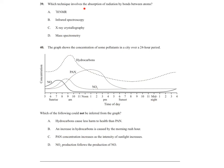Question 39 is a recall question: which technique involves the absorption of radiation by bonds between atoms? Infrared spectroscopy shines infrared radiation at a sample and measures how much is absorbed by the bonds. HNMR involves magnetic properties and spin of nuclei. X-ray crystallography uses diffraction of X-rays to study molecular structures — not absorption by bonds. Mass spectrometry propels charged particles and measures their deflection or time of flight. Therefore the answer is infrared spectroscopy.